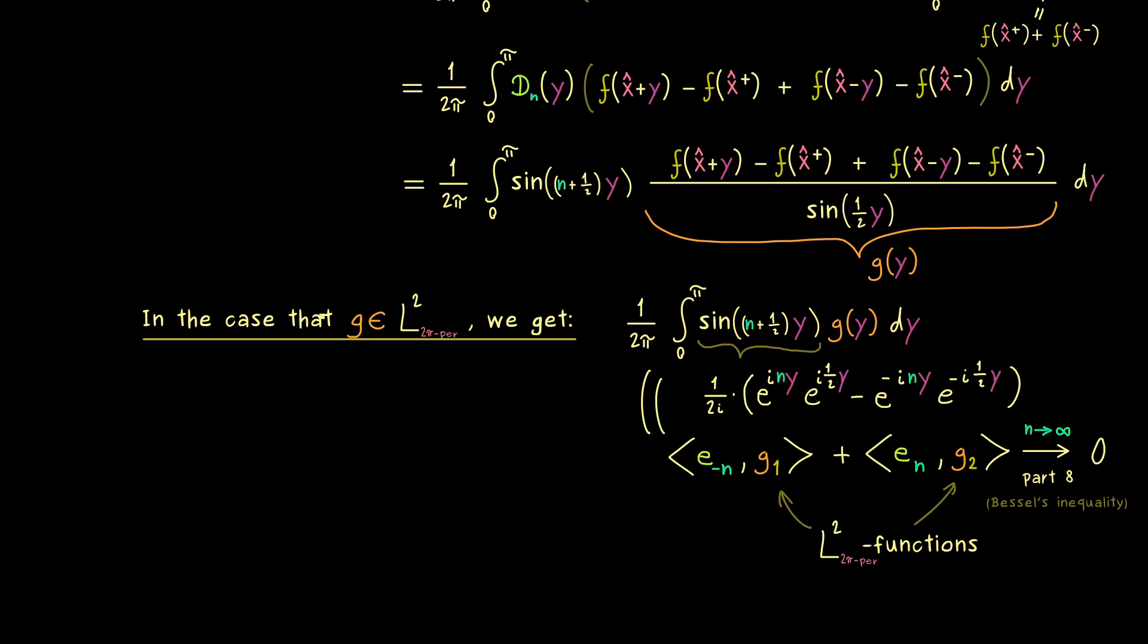So we conclude here in the case that g is an L2 function then we already know that the whole thing here tends to 0 when n goes to infinity. And please recall this is exactly what we wanted to prove from the beginning. In that case we are done. Or in other words the only thing remaining to show is that this function g is an L2 function.